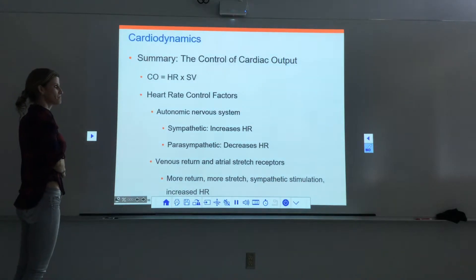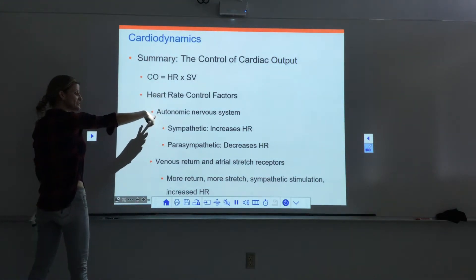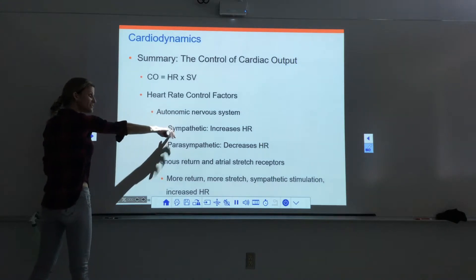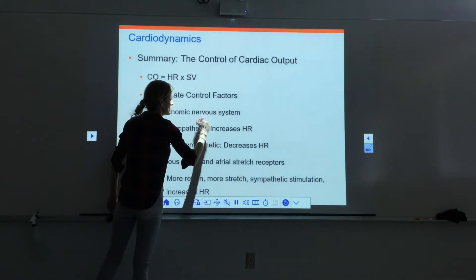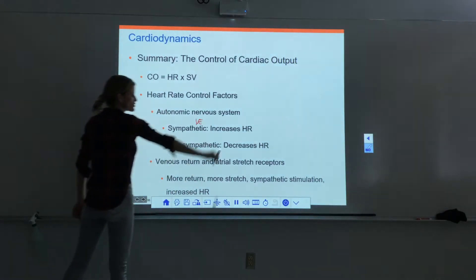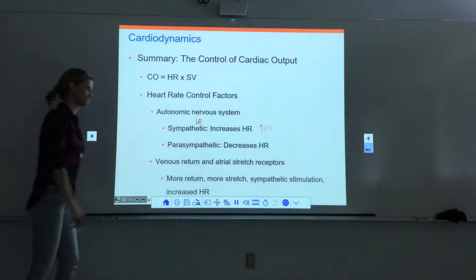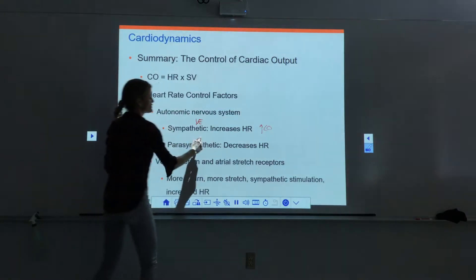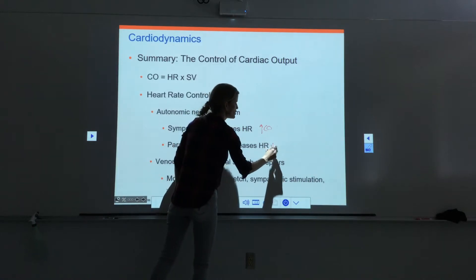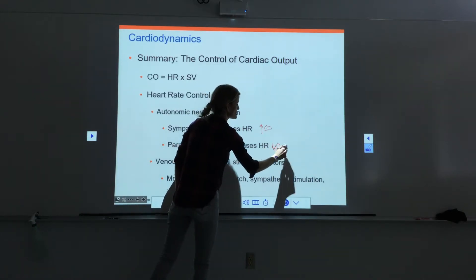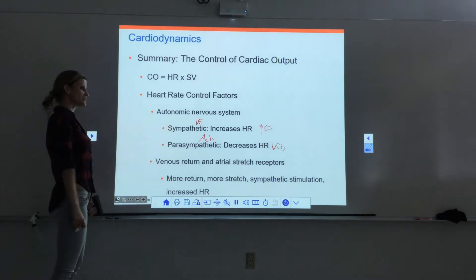To adjust heart rate, we can adjust the autonomic nervous system. The sympathetic nervous system utilizes norepinephrine to increase heart rate, which increases cardiac output. The parasympathetic nervous system utilizes acetylcholine to decrease heart rate, which decreases cardiac output. When exercising, the sympathetic system dominates.